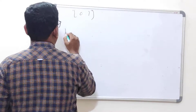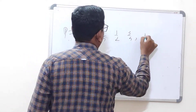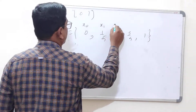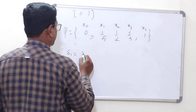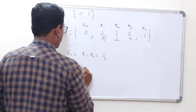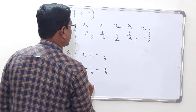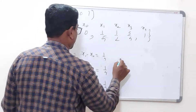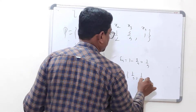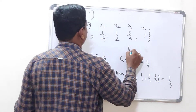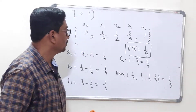Let me find the norm of an example partition. Suppose the interval is [0, 1] and the partition is {0, 1/4, 1/2, 3/4, 1}. These are equally spaced points x₀, x₁, x₂, x₃, x₄. Then δ₁ = 1/4 − 0 = 1/4, δ₂ = 1/2 − 1/4 = 1/4, δ₃ = 3/4 − 1/2 = 1/4, and δ₄ = 1 − 3/4 = 1/4. The norm is the maximum of all these, which is 1/4. So ‖P‖ = 1/4 for this partition.